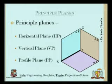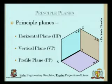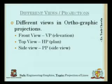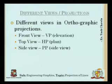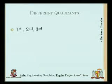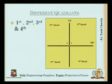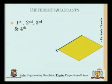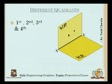Again there are three types of principal planes: horizontal plane, vertical plane, and profile plane. We will not get into the details because this was discussed last time. There are three types of views: front view is on the vertical plane, top view is on the horizontal plane, and side view is on the profile plane. This is the isometric view of the quadrants formed by the X and Y axis.